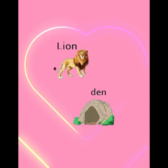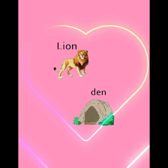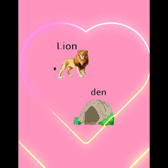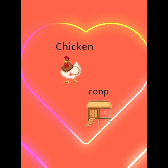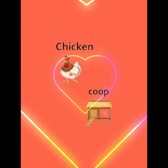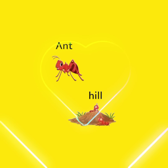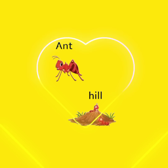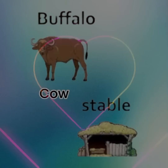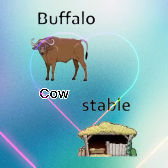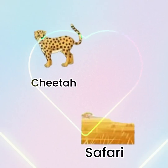Lion — lion lives in a den. Chicken — chicken lives in a coop. Ant — ants live in a hill. Buffalo and cow — they live in a stable.